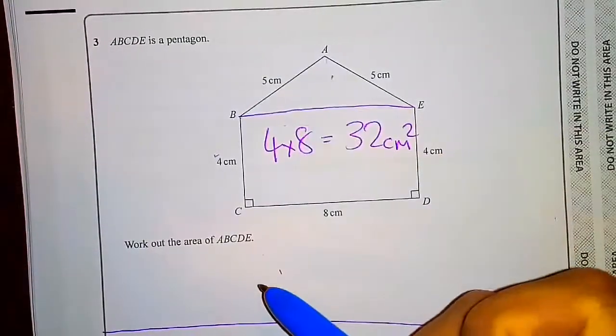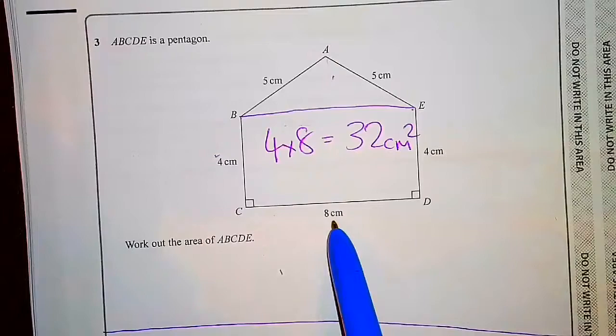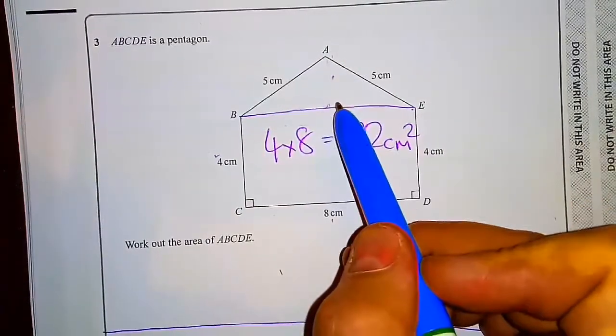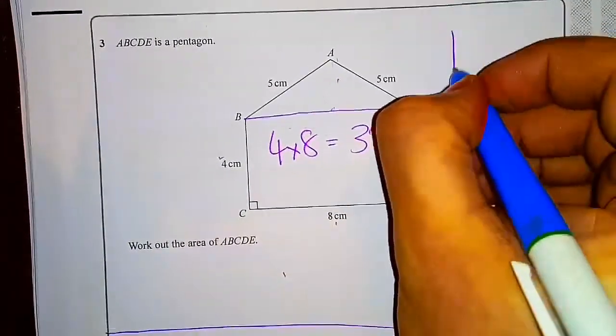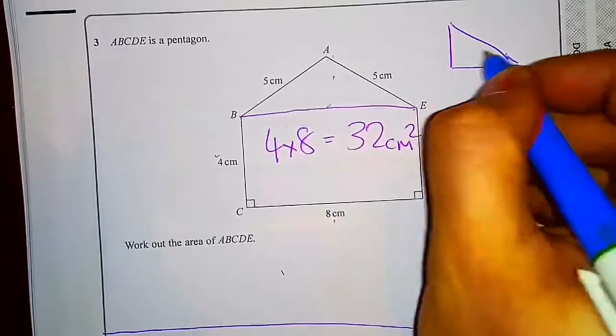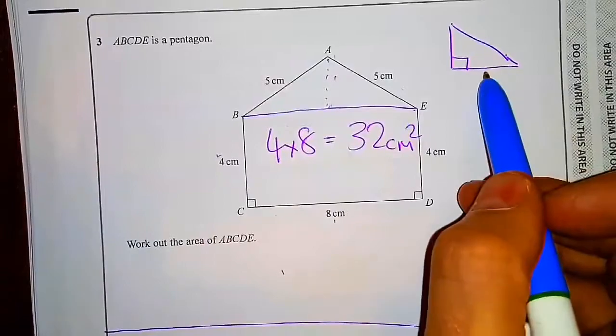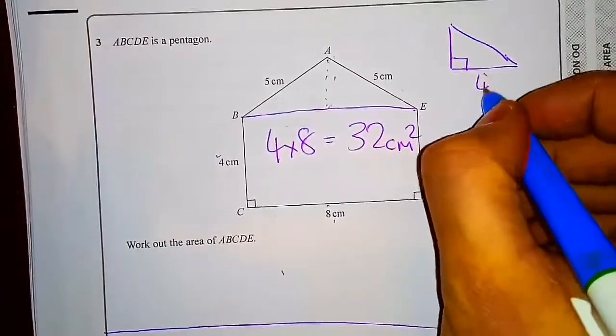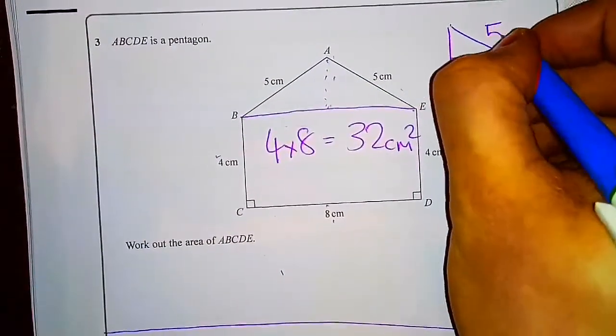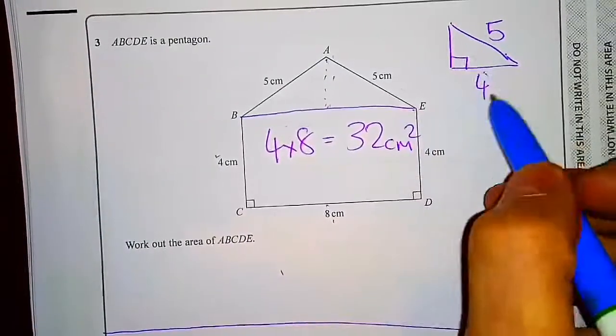Now my triangle on top is a little bit harder because I need my base, which we've got - eight - but I don't have my height. So I now need to work out my height. I'm just going to redraw this as if I was doing that one there. Because it's isosceles, our base is going to be half of that, which is 4, and my longest side is 5.